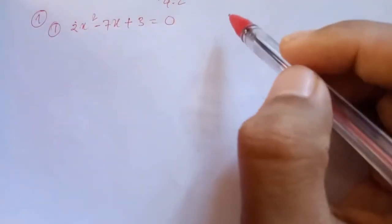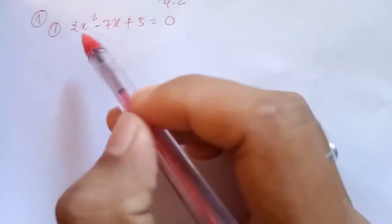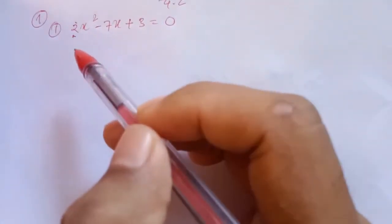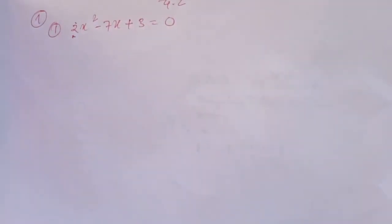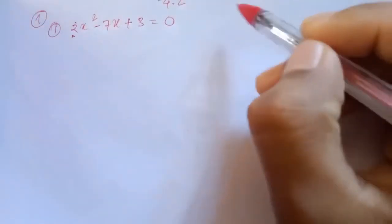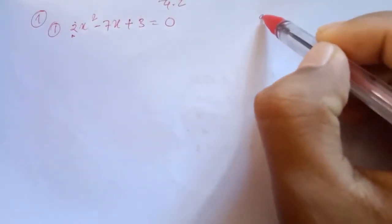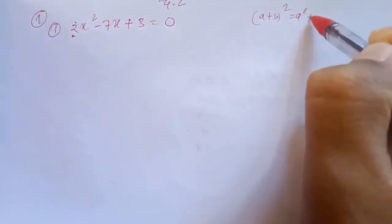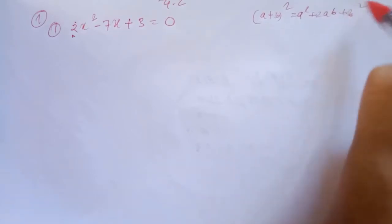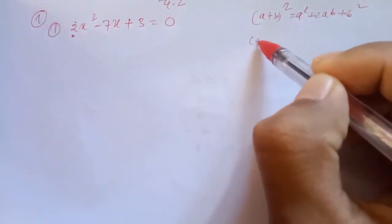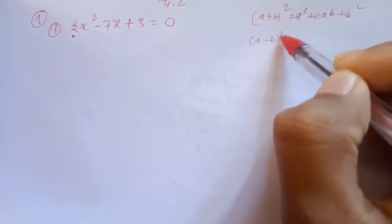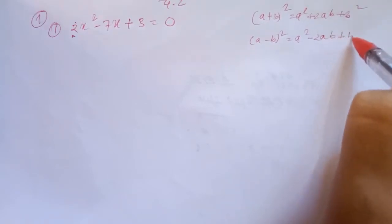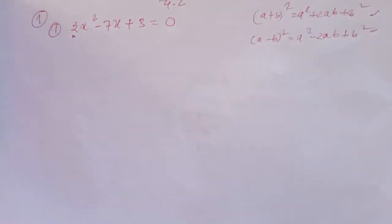The formula is: a plus b whole square equal to a square plus 2ab plus b square. And a minus b whole square equal to a square minus 2ab plus b square.